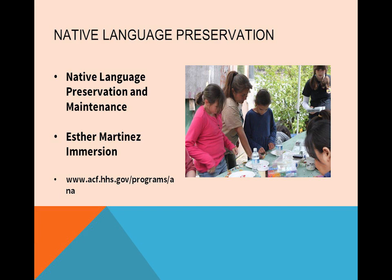We also have the Esther Martinez Immersion grant, which has a narrower focus. These grants must be three years, and you can only have a grant if you have a language nest, a survival school, or a restoration program. Language nests serve children seven and under, and survival schools serve school-age children. You can find more about all our programs at acf.hhs.gov/programs/ANA, under the programs tab.